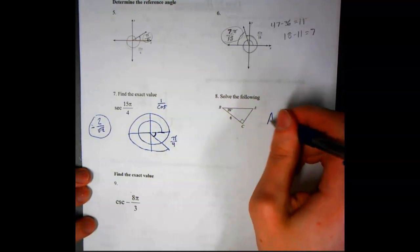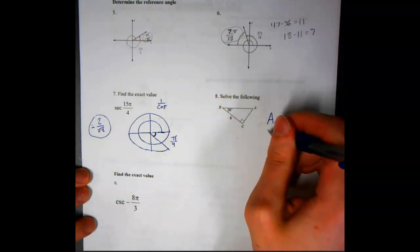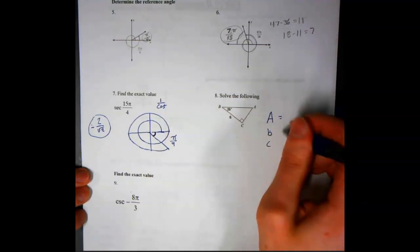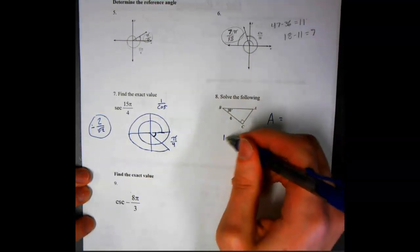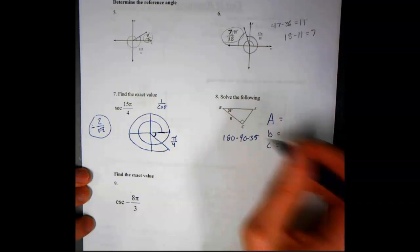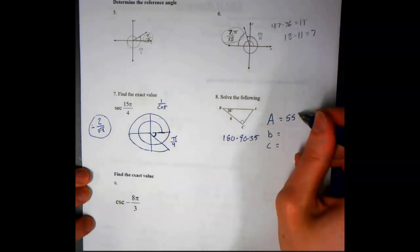So for problem 8, we need to find angle A. We need to find side B and side C. Angle A, we're going to say 180 minus 90 minus 35, and that's going to be 55 degrees.